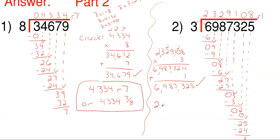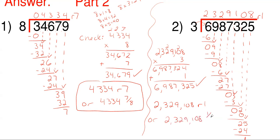So my answer is how many times does 3 go into that number? It goes in 2,329,108 times with a remainder of 1. Or you could write it as 2,329,108 with the remainder divided by my dividing number of 3. Either way is an acceptable answer.